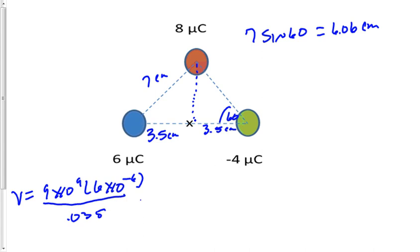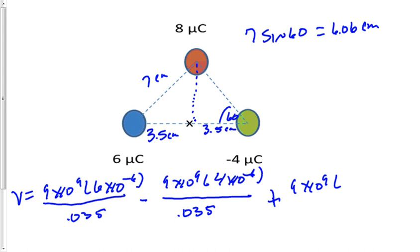And this is a negative charge, so it will be minus 9 times 10 to the ninth multiplied by 4 times 10 to the minus 6 divided by .035. Plus the third charge. Then we just add those together. There's no vector addition needed. So we have a positive, a negative, and a positive. So the voltage is equal to 1.7 times 10 to the sixth volts.